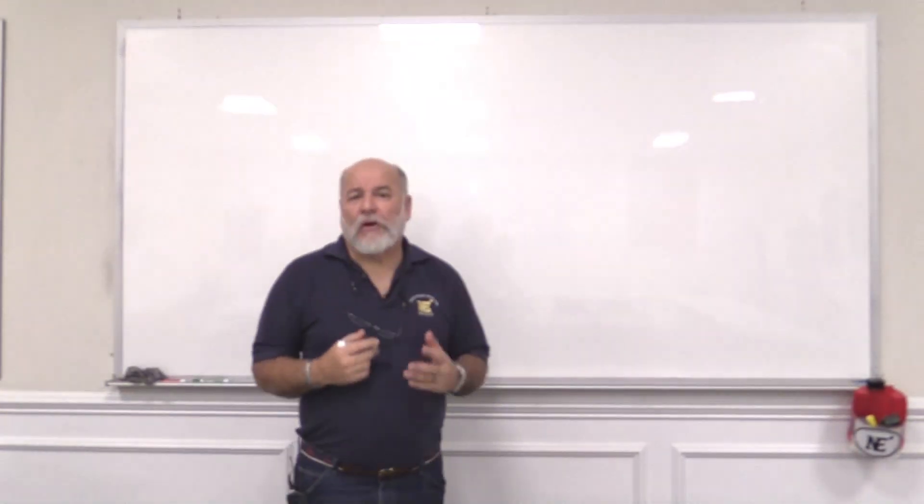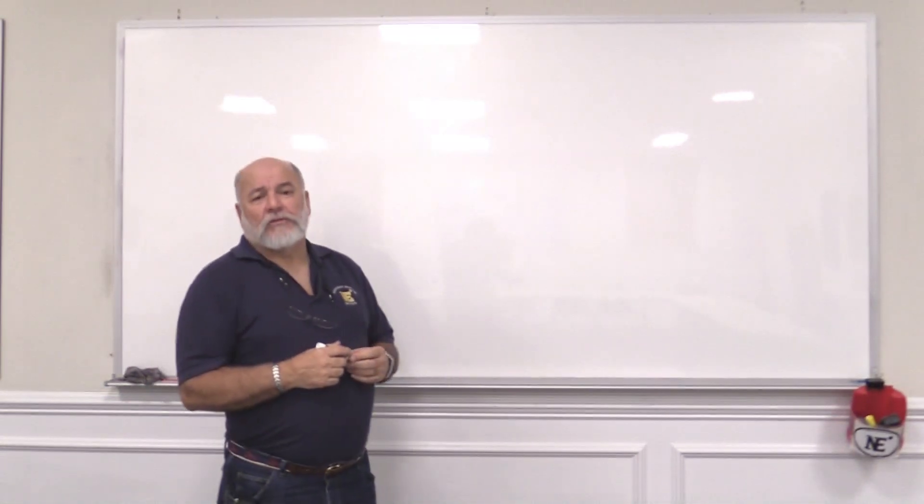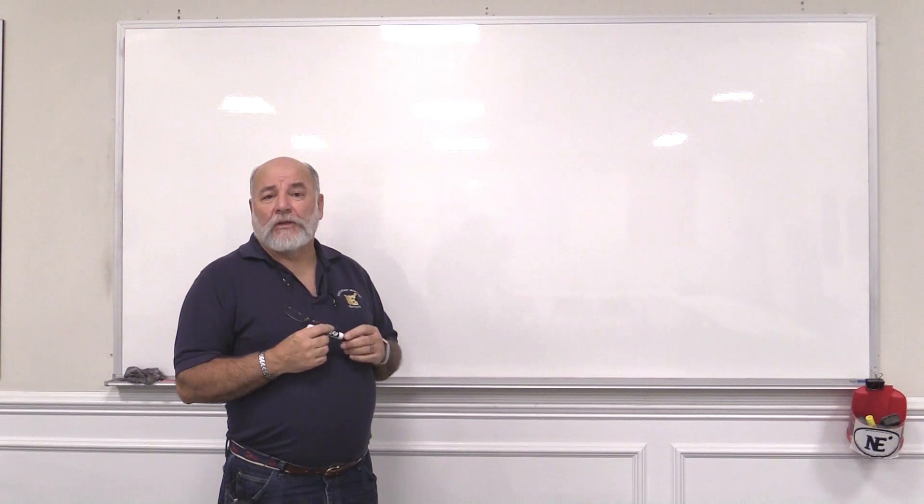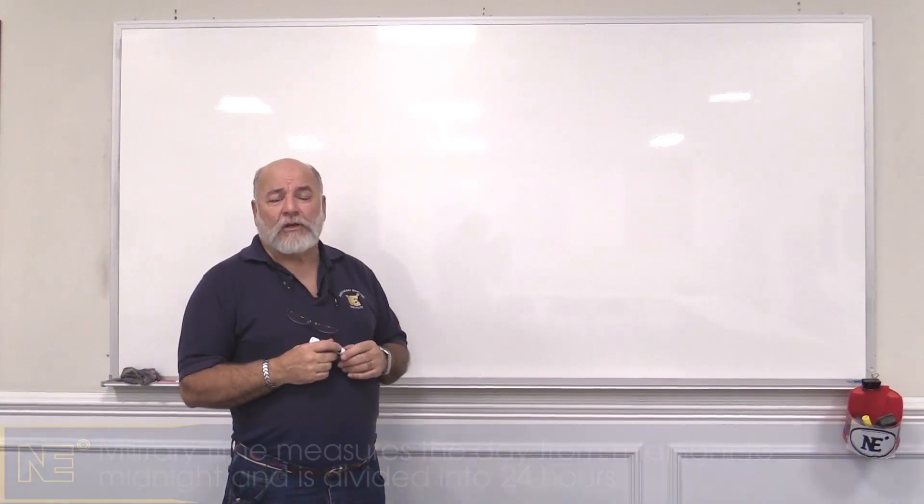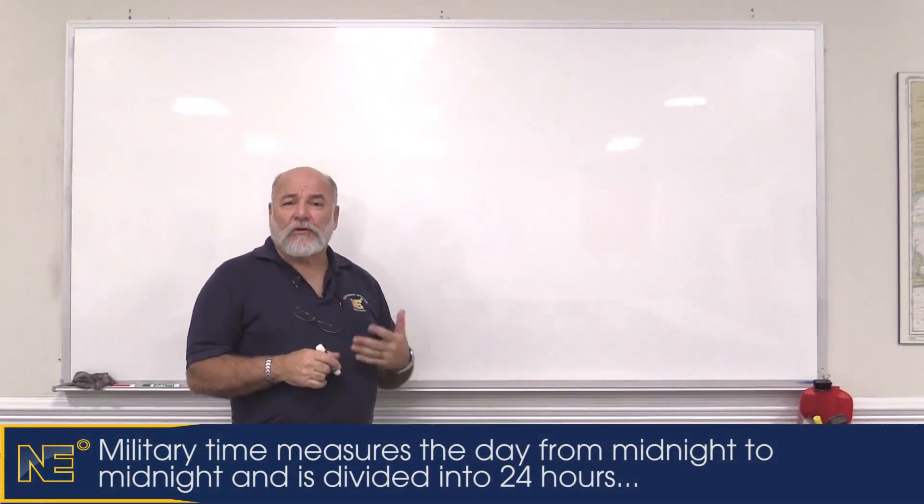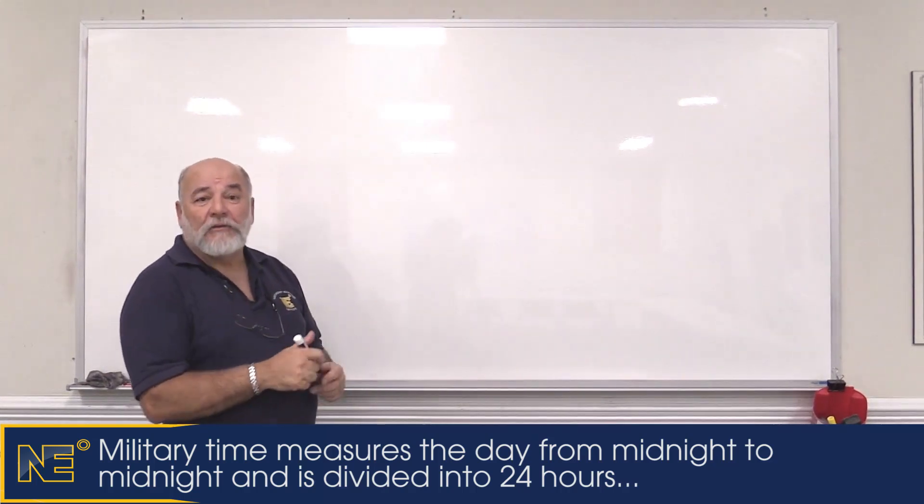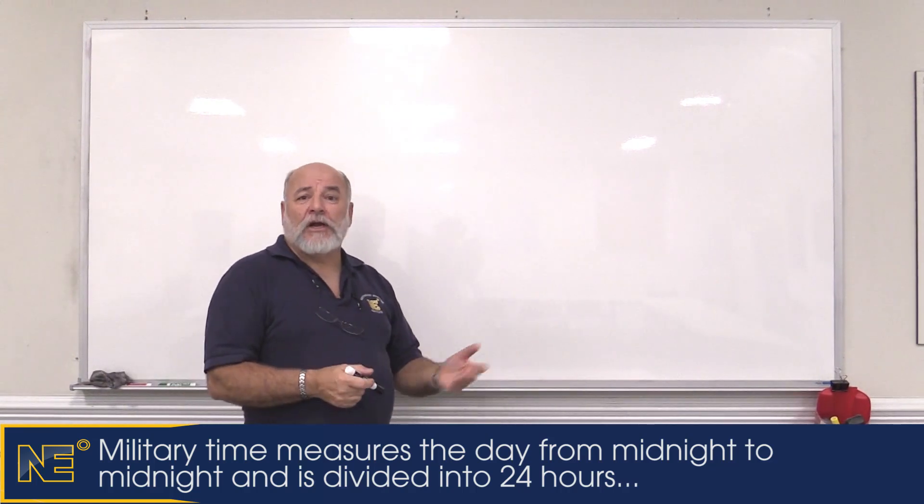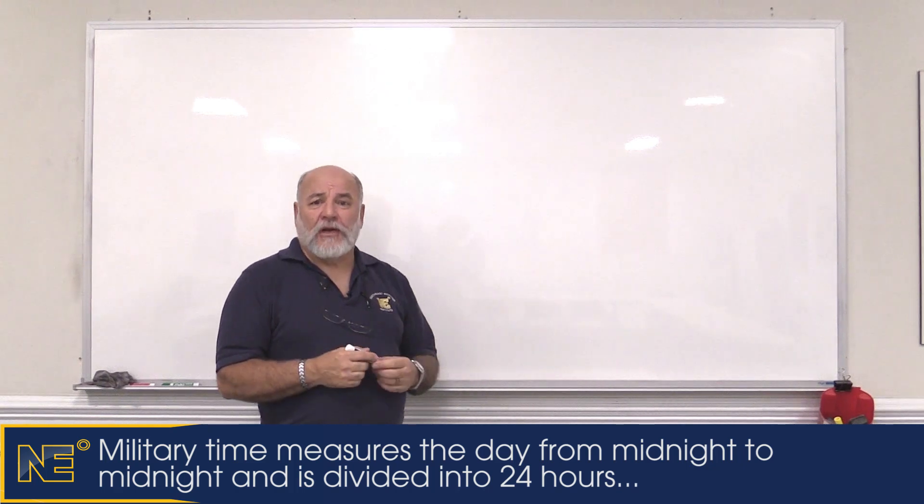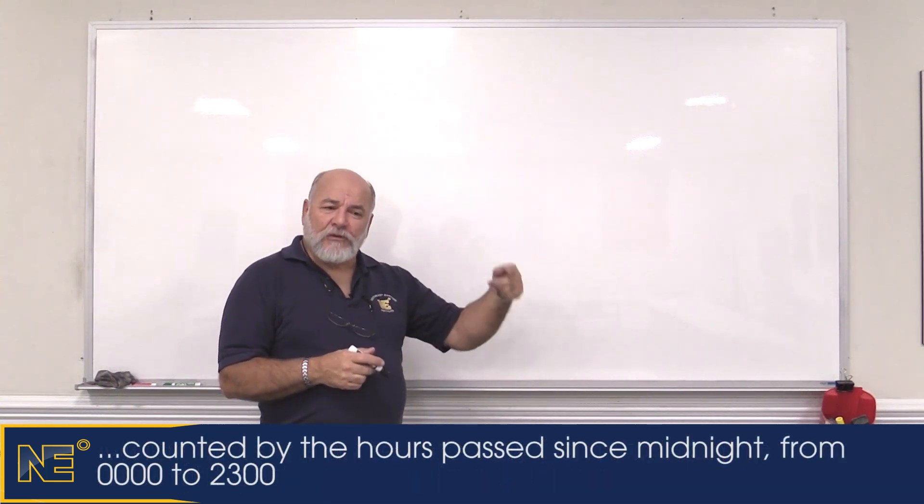Let's take a few minutes and talk about time. Everything that the Coast Guard does is going to be based on military time, the 24-hour clock. After 12 o'clock on the regular clock, we go to one, Coast Guard time would be 1300, 1400, 1500, and so forth. We just do the math.